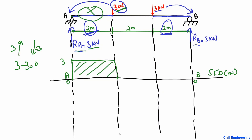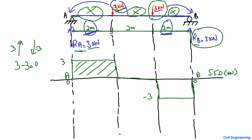In the middle portion of the beam there is no load, so the shear force stays at 0 — a straight horizontal line. Then the second 3 kN downward load drops the shear force to −3 kN, which remains constant until support B where the 3 kN upward reaction brings it back to 0.